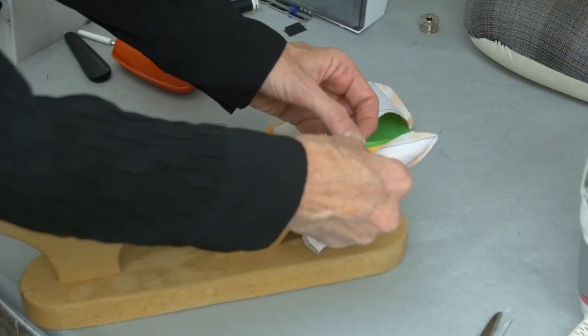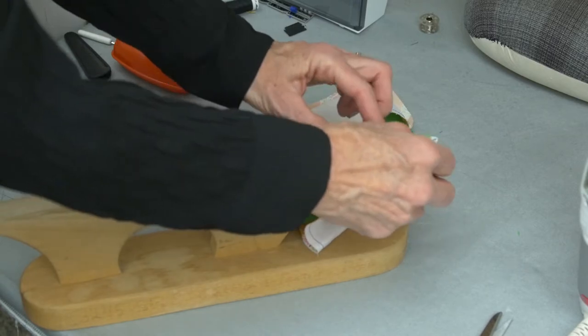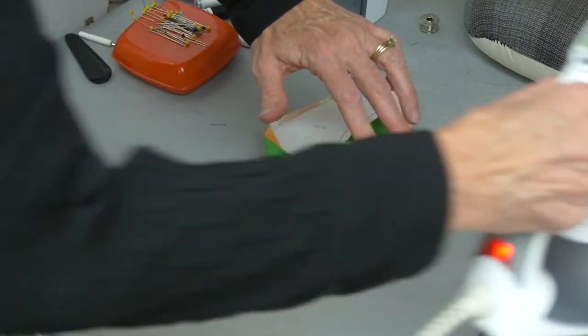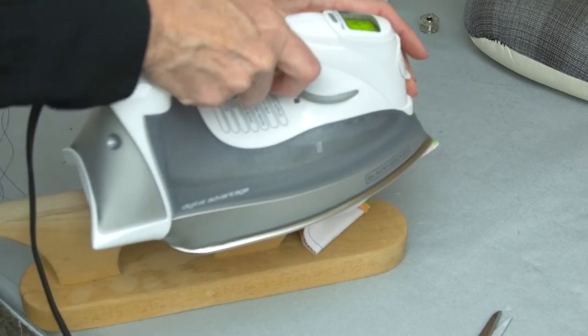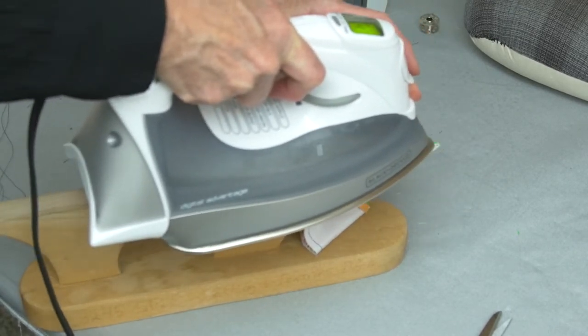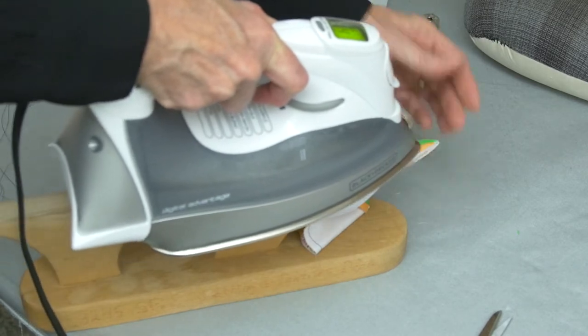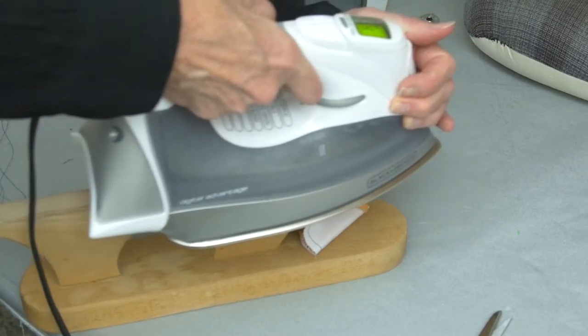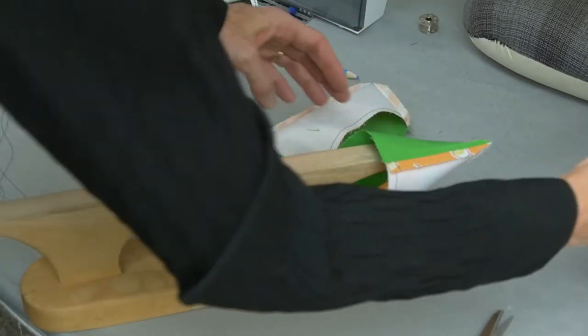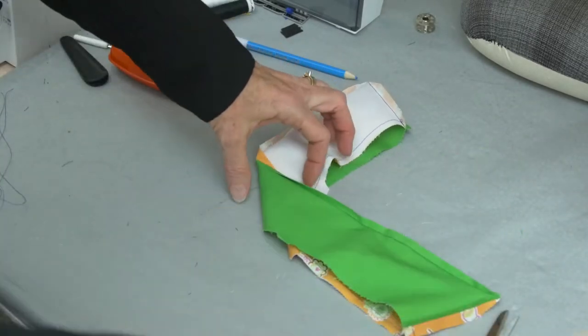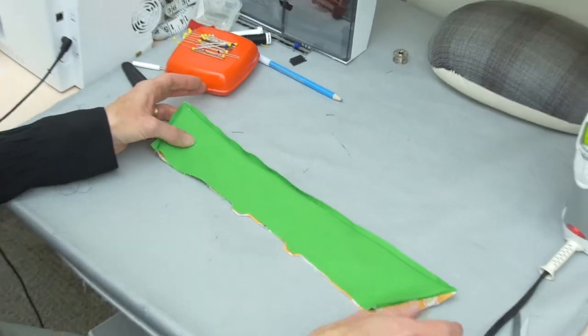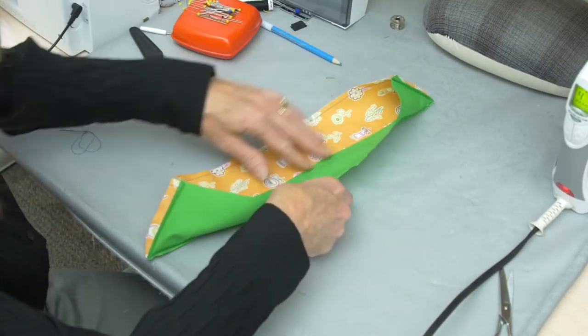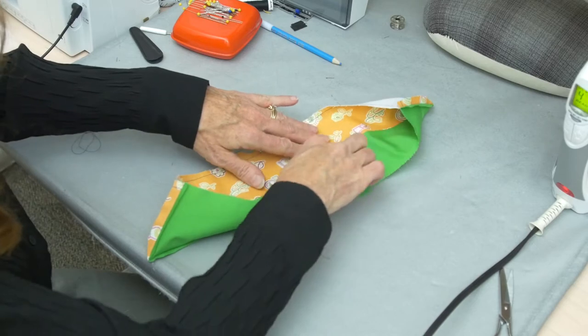The other thing that the point presser does that's kind of nice, because it's a hard surface, it helps to give a really crisp edge to what you're stitching there. So the seam gets pressed open. Look inside, make sure the edge is well defined. The edge looks crisp there.